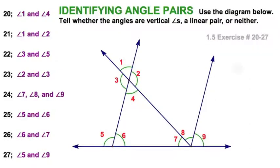Now we're going to identify angle pairs in this diagram—that would be exercises 20 through 27. Let's start with angles one and four, identified right there. We can see there a pair of crossing lines and angles that meet at a vertex—vertical angles.